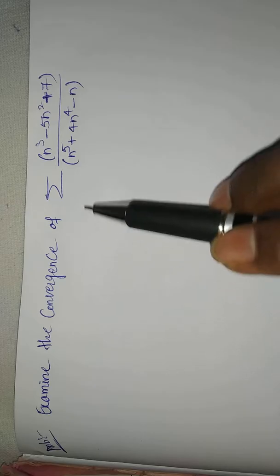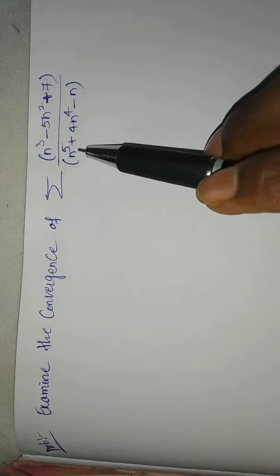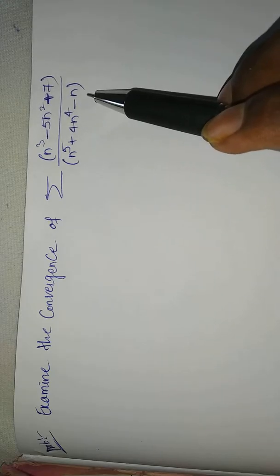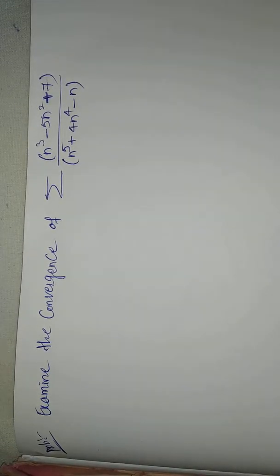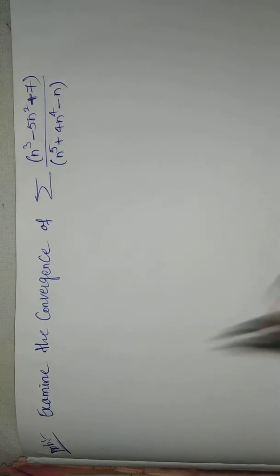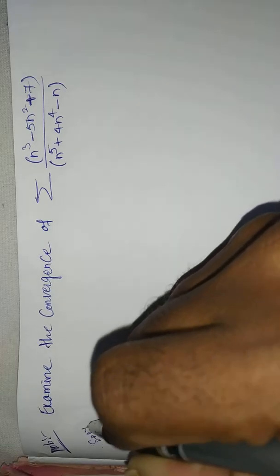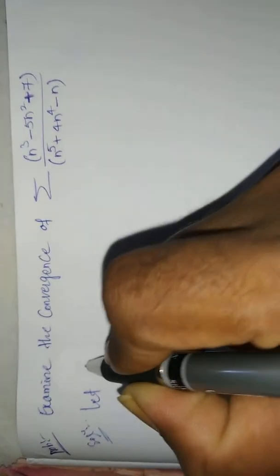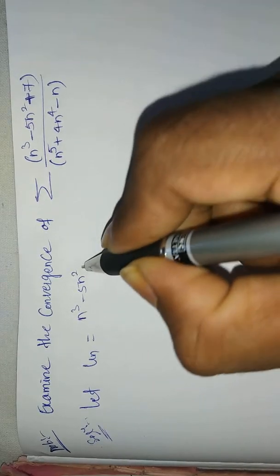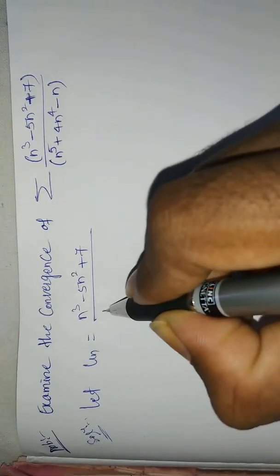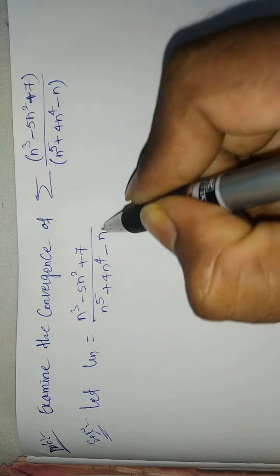Examine the convergence of the summation of (n³ - 5n² + 7) / (n⁵ + 4n⁴ - n). Let uₙ equal to (n³ - 5n² + 7) / (n⁵ + 4n⁴ - n).